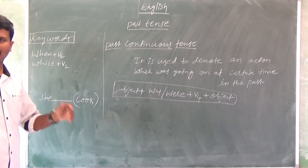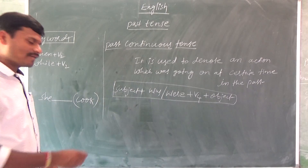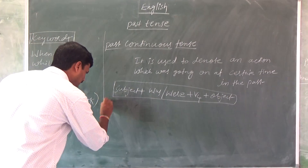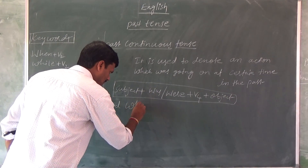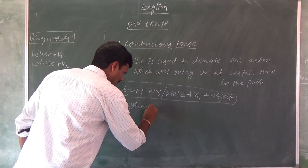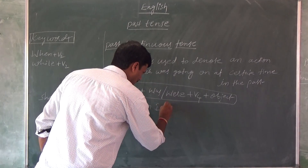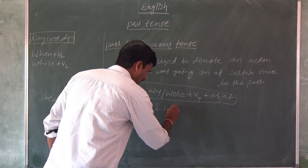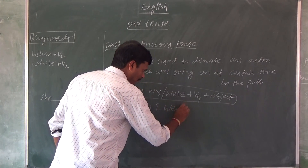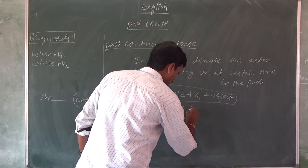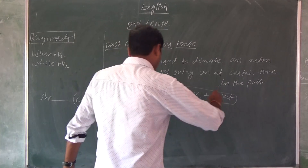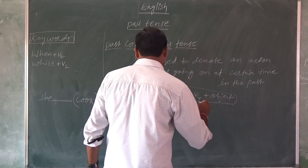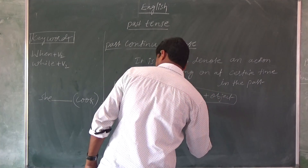So for a singular number subject, we have to use 'was', and for a plural subject, we have to use 'were'. That is the difference between 'was' and 'were'. Everybody has to remember this.